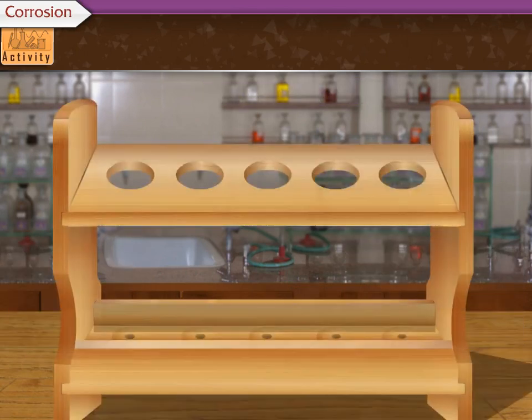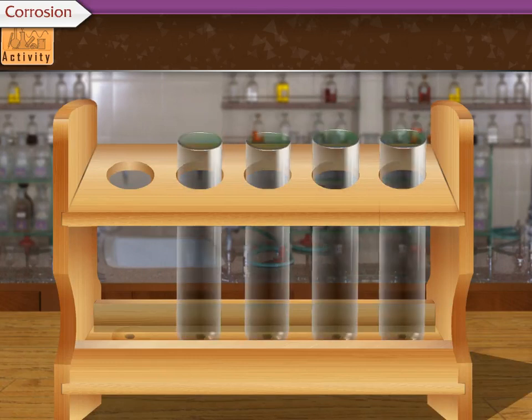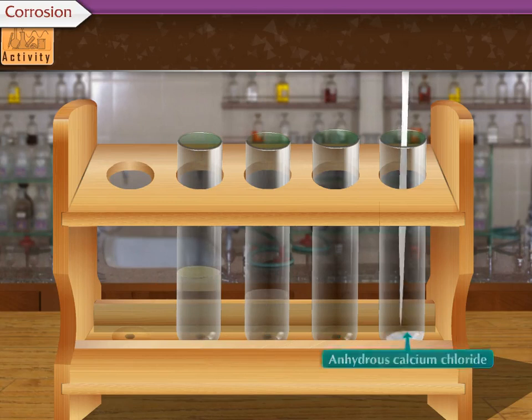Let us begin with the activity. First, let us take 4 test tubes. Take some boiled water in one test tube and put an oil layer on it. Take some salt water in the second test tube. Let there be only air in the third test tube. In the fourth test tube, take some anhydrous calcium chloride.